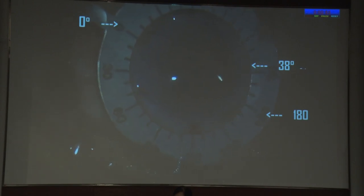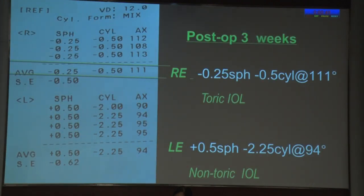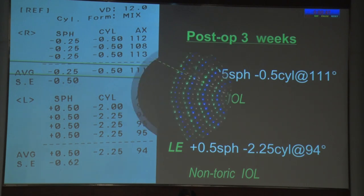For final confirmation, hold the Mendez ring such that its 38-degree marking coincides with the landmark point. In this position, the lens markings must face 0 and 180 degrees. Post-op at 3 weeks: in the right eye where the toric lens was implanted using the toric marking topographer, the residual refractive error is 0.5 diopter cylinder. In the left eye where the monofocal lens was implanted, the residual refractive error is 2 diopter cylinder.